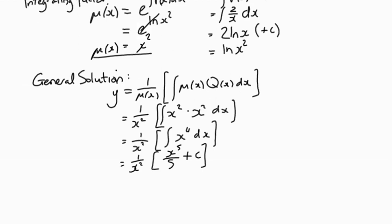This gives us x⁵/5 + c. We've got to keep that one in. And we can multiply out the brackets here: 1/x² times x⁵/5. These x²s cancel out to give us x³/5 + c/x². Now that is a general solution.